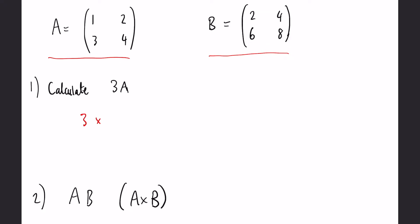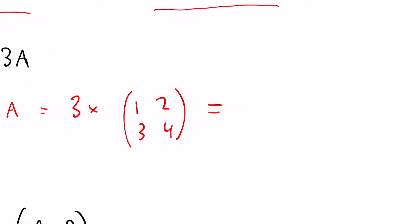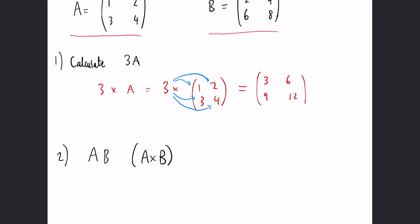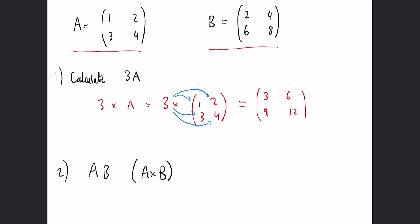In this case we have 3 times A, which is 3 lots of our first matrix. All we have to do is multiply that 3 by each element in the matrix. So 3 times that matrix gives us 3, 6, 9, and 12 - that's our answer.